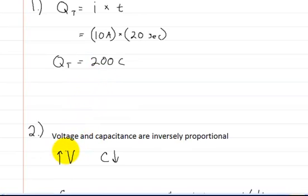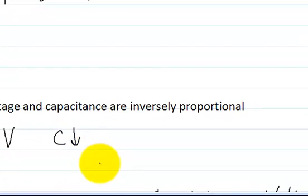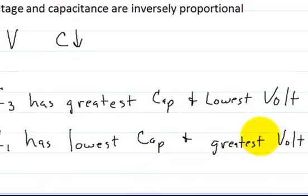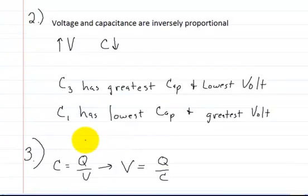Voltage is inversely proportional to capacitance. When you have high voltage, capacitance will be low, and vice versa. C3 has the greatest capacitance and lowest voltage, while C1 has the lowest capacitance and greatest voltage. Let's prove that.